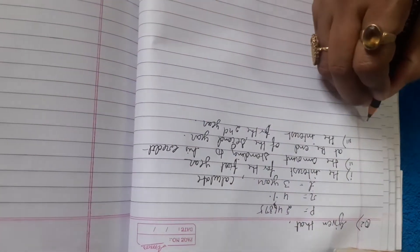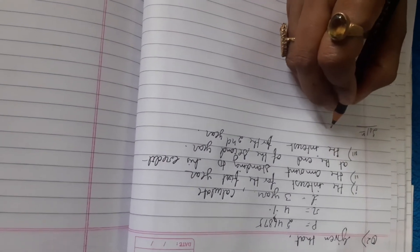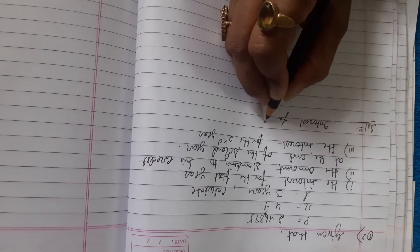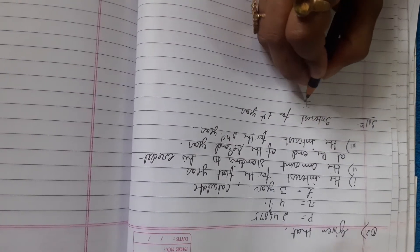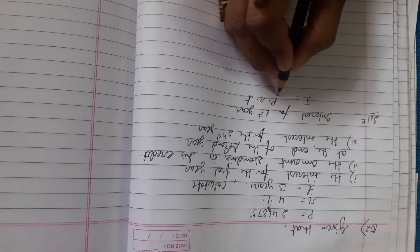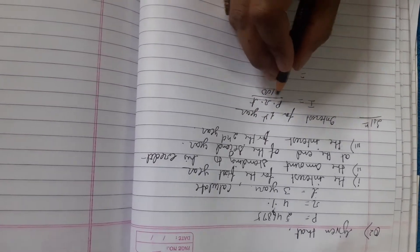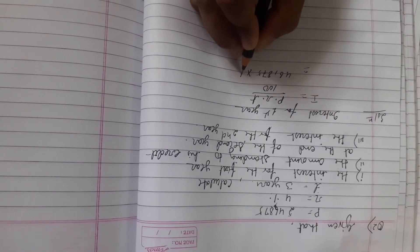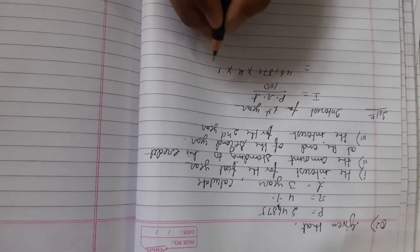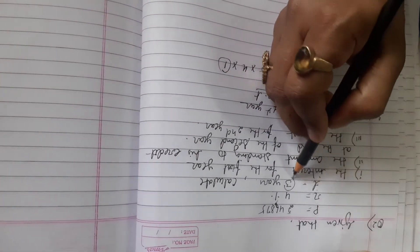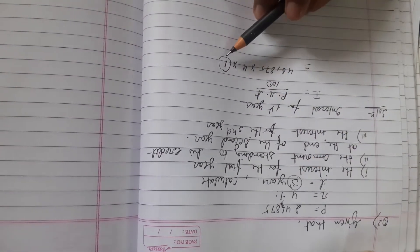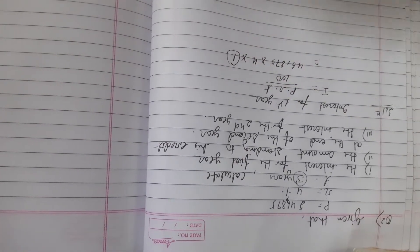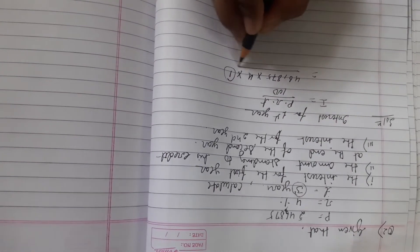For the interest for the first year, the formula is I equals P into R into T upon 100. Putting the values in: P is 46,875, rate is 4%, and timing is 1. I am telling you — don't be confused that if three years is given, why we are taking one. Because per year we are solving the sum, so for one year it should be one. Three times we will solve the sum, so that will cover three years.